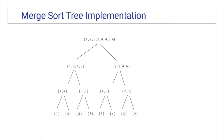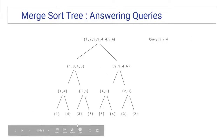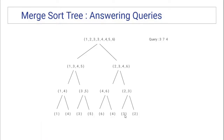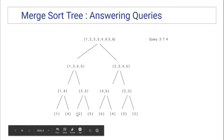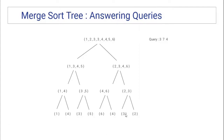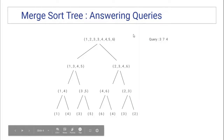Suppose there is a query of type 3, 7, 4 — that means in the range 3 to 7, how many elements are strictly smaller than 4? We can see there are two elements strictly smaller than 4: this element and this one — those two are 3 and 3. So the answer of the query should be 2.